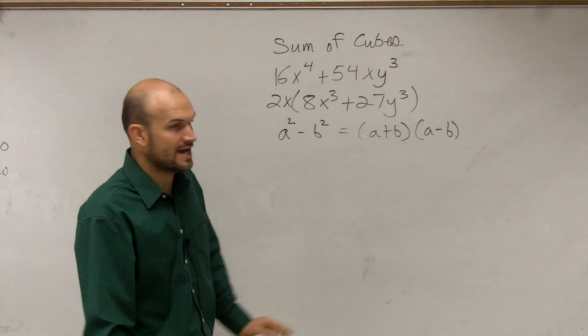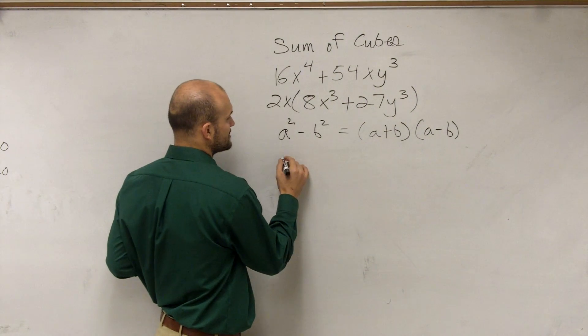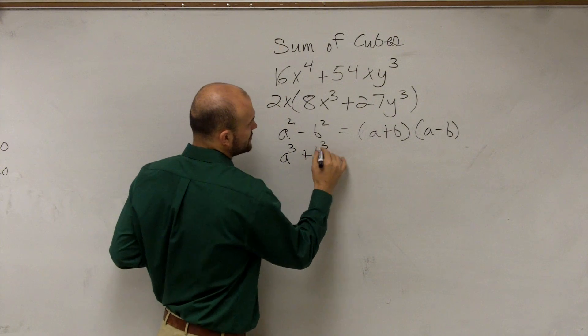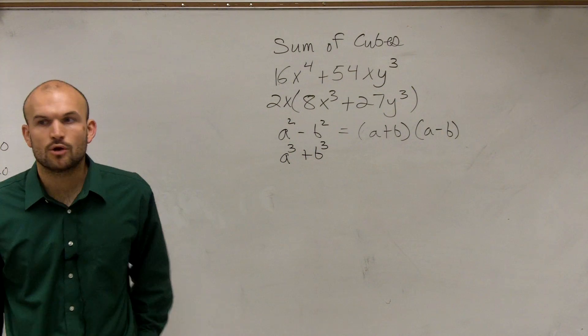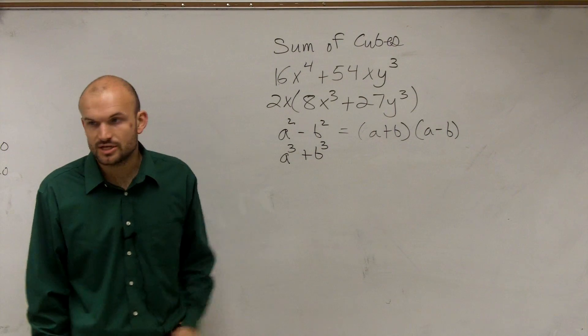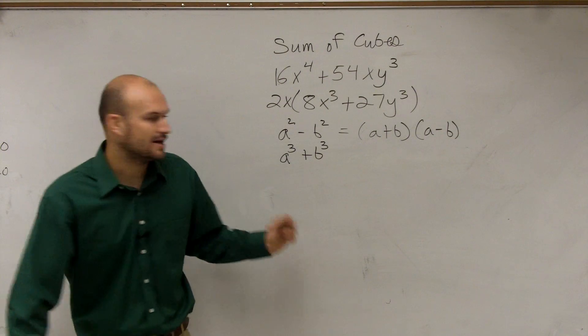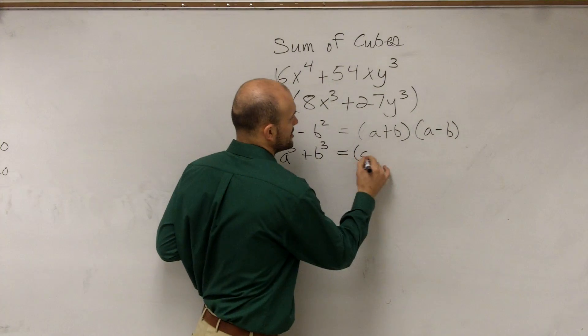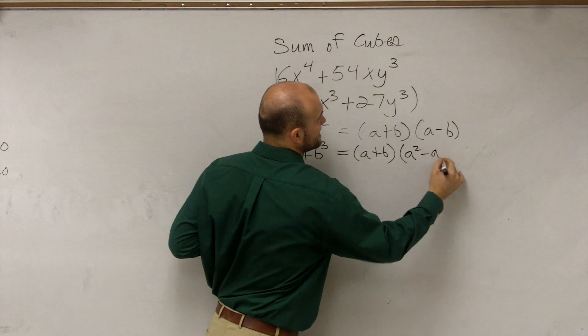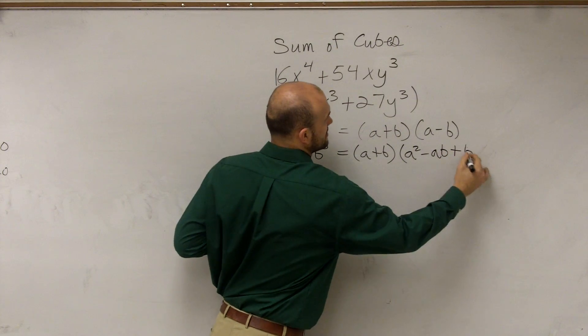So now what I'm going to look at is we're actually going to be talking about the sum of two cubes. So what would that be a factored form of that? If I have a cube number plus another cube number, how can I rewrite that? Well, the formula for that is going to be a plus b times a squared minus ab plus b squared.